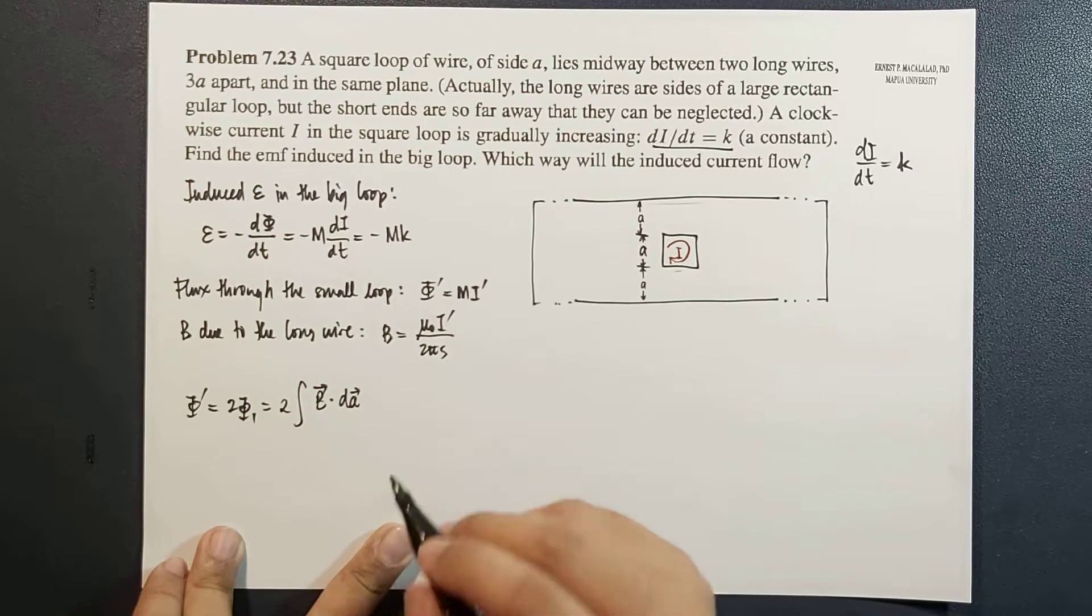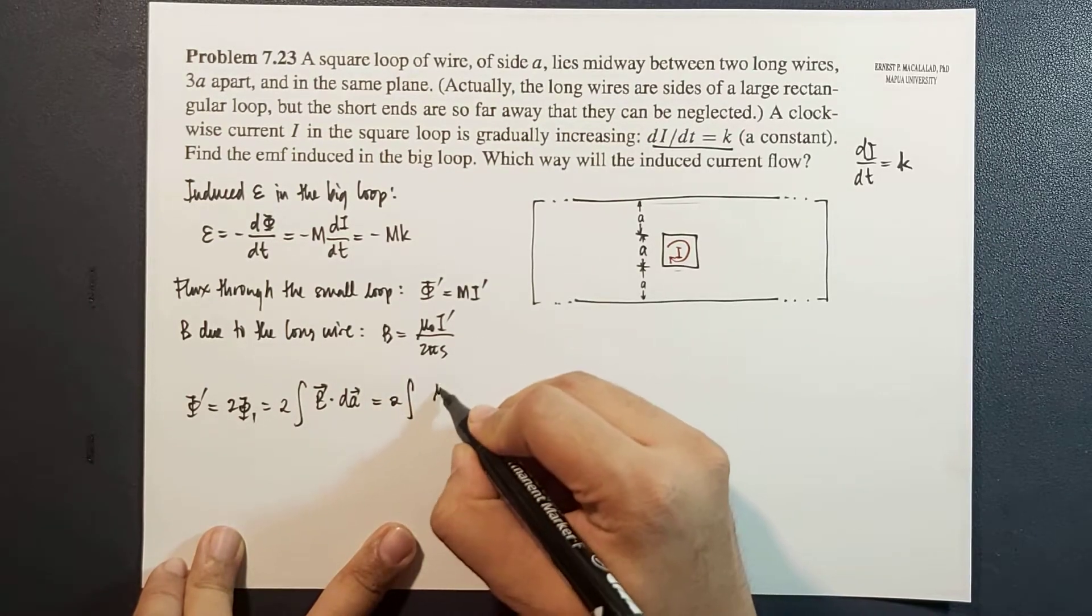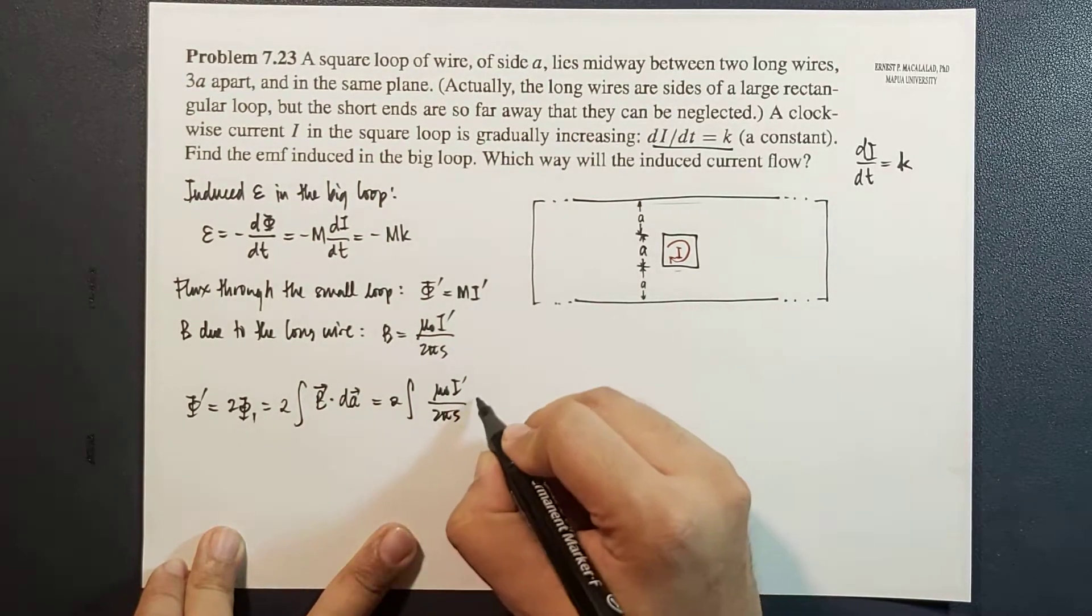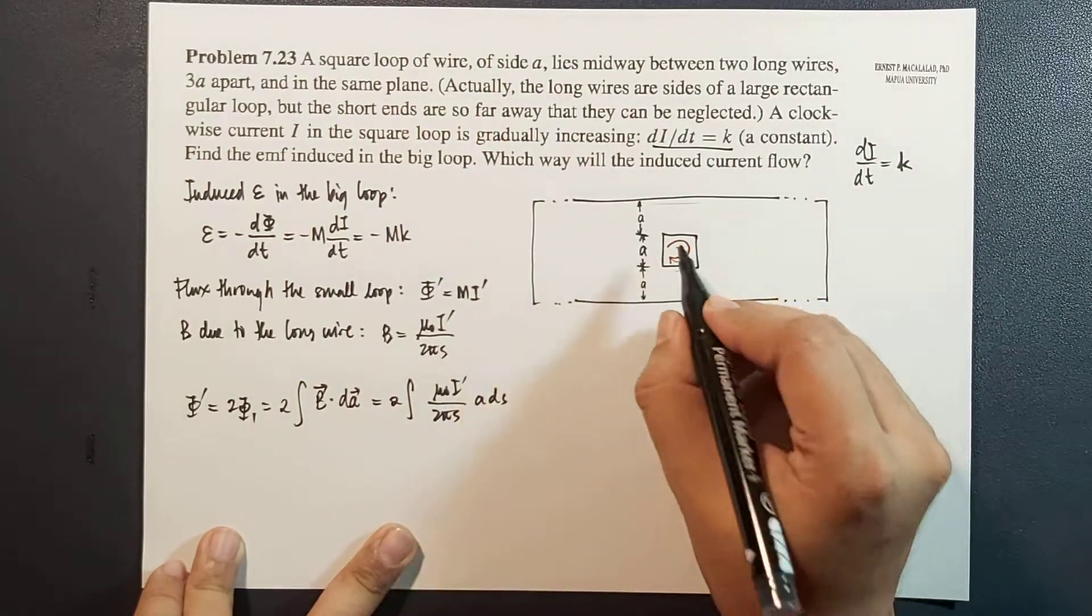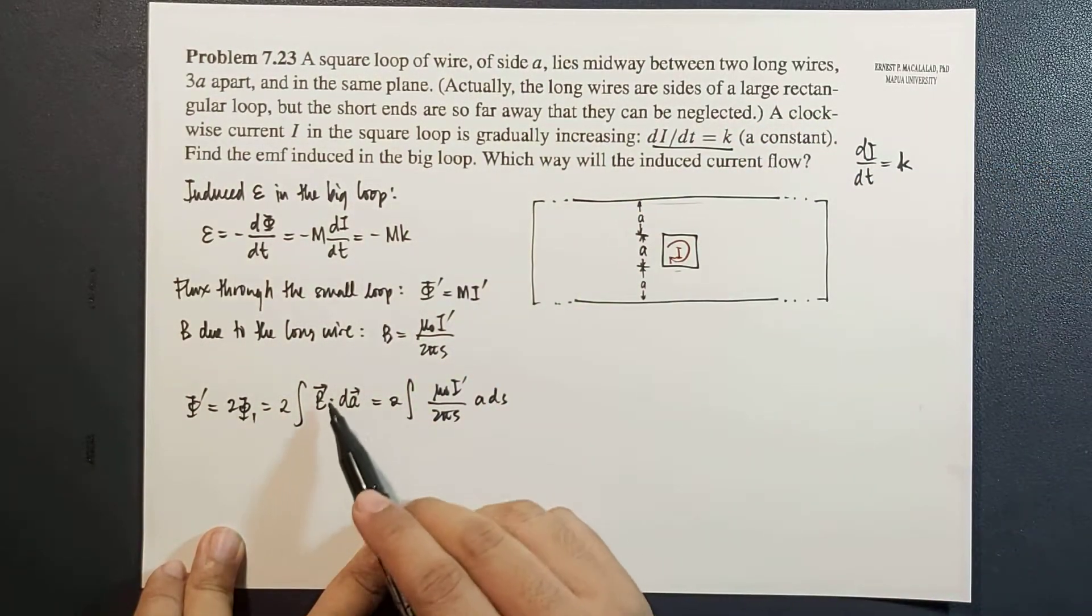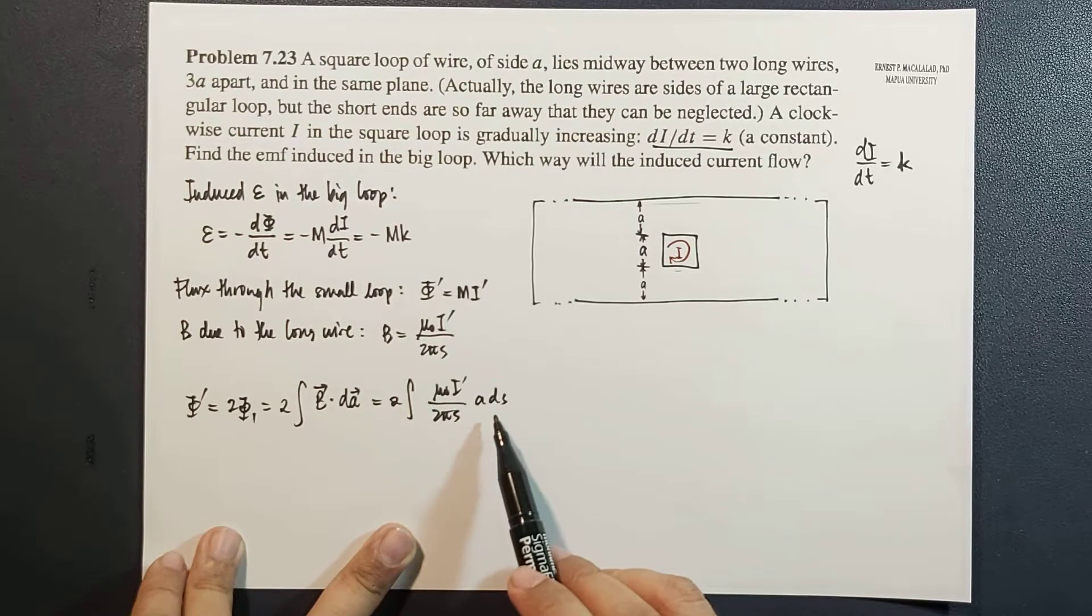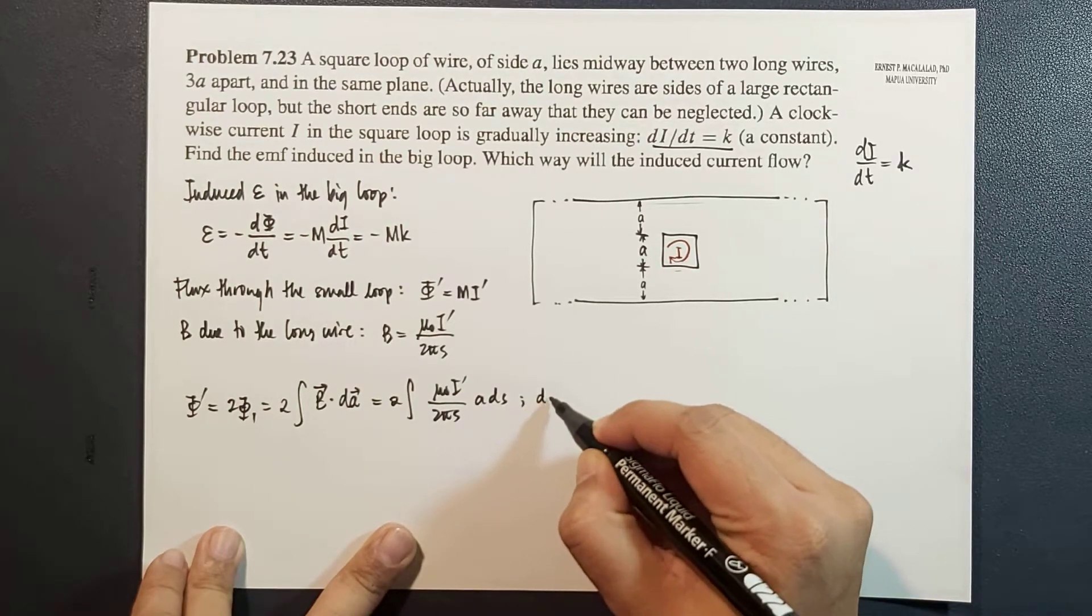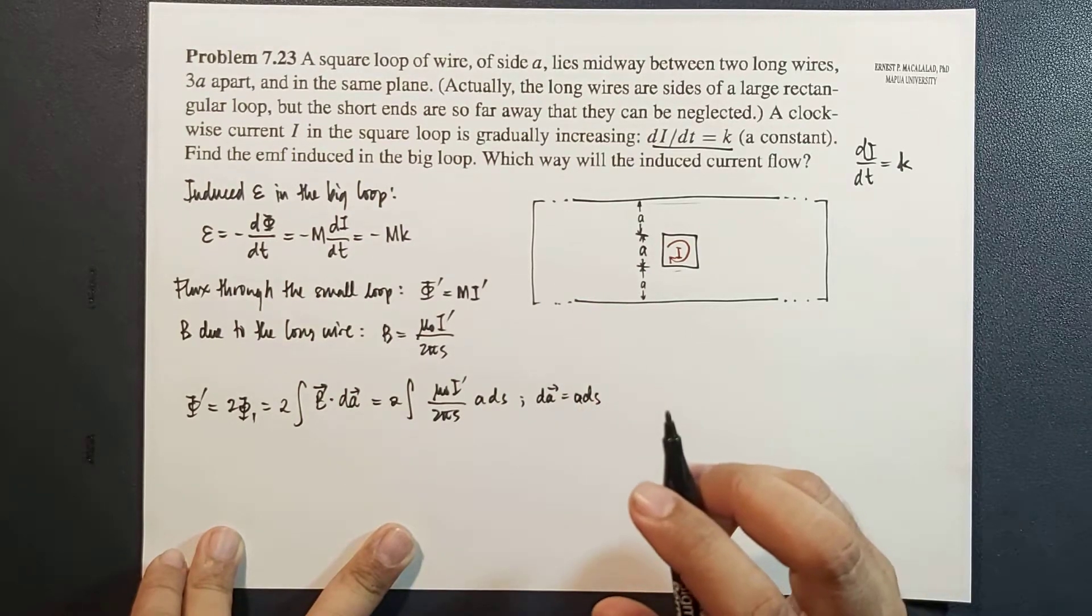Let's calculate this. This is now equal to 2 times mu naught I prime over 2 pi s times A dS, where A dS is the area element. Remember that the magnetic field, as I mentioned, is perpendicular to this plane, and the area element dA is also perpendicular to this plane. So therefore, that product will now be a simple multiplication. dA will be A dS.